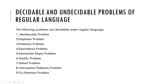The following problems are decidable under regular language: first, membership problem; second, emptiness problem; third, finiteness problem; fourth, equivalence problem; fifth, intersection empty problem; sixth, totality problem; seventh, subset problem; eighth, intersection finiteness problem; and ninth, co-finiteness problem. The first four properties have already been discussed in decision properties of finite automata.